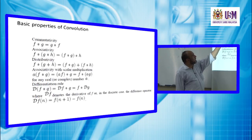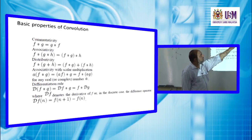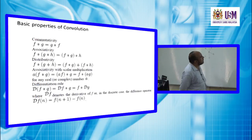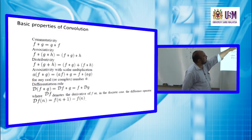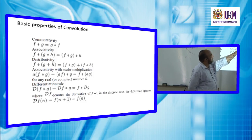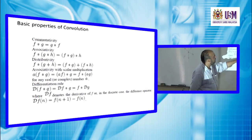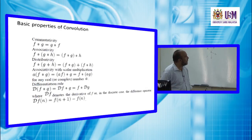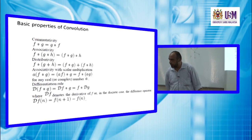Convolution is distributive: f * (g + h) = f*g + f*h. It also has a scalar associativity property: a scalar a multiplied by the convolution of f and g equals (a·f) * g, which also equals f * (a·g), where a is any real or complex number.